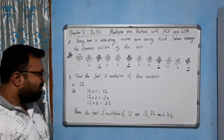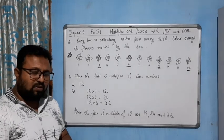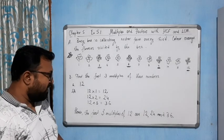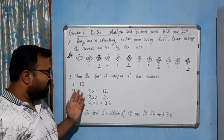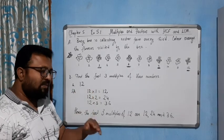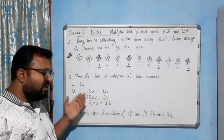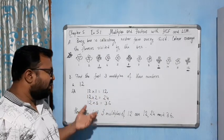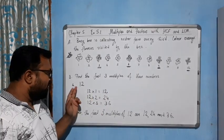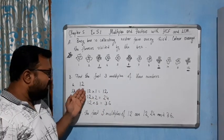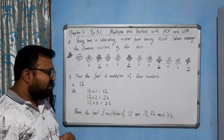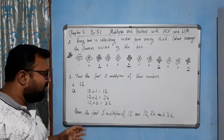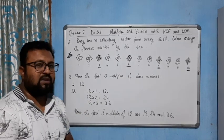So I hope you have understood how to find the first three multiples — or four or five, whatever the question may ask — of different numbers. I think you have understood this part.